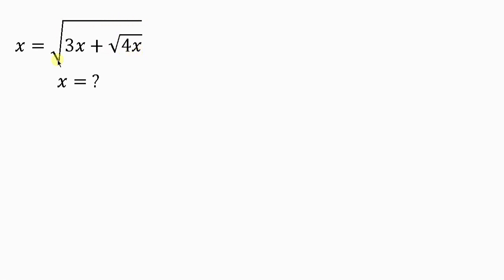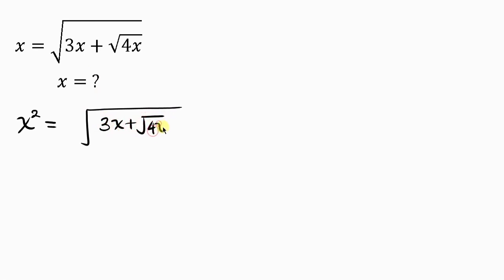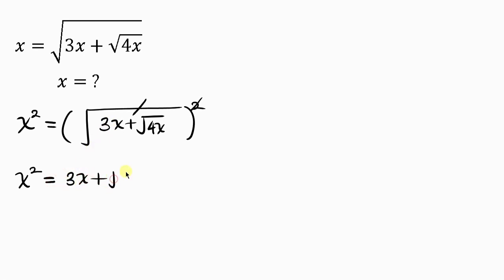Our first step will be to get rid of the square root, and we're going to do that by taking the square of both sides. So I'll square the left hand side and also square the right hand side. On the right hand side we have the square root of 3x plus the square root of 4x, so squaring cancels off the square root. We have x squared equal to 3x plus the square root of 4x.